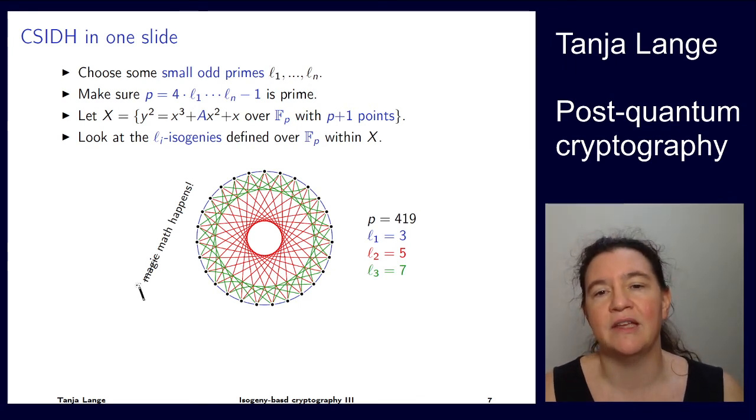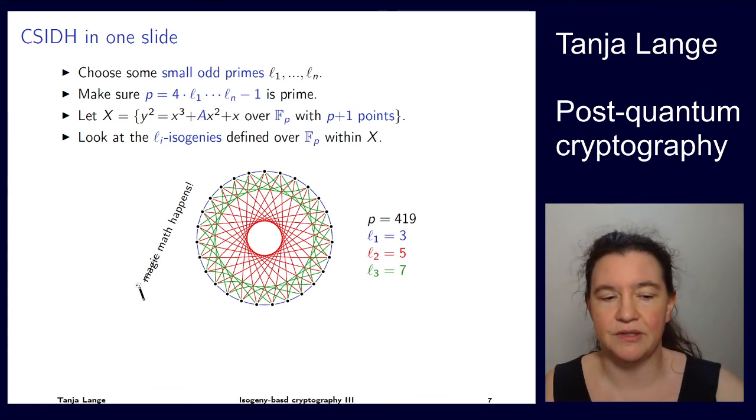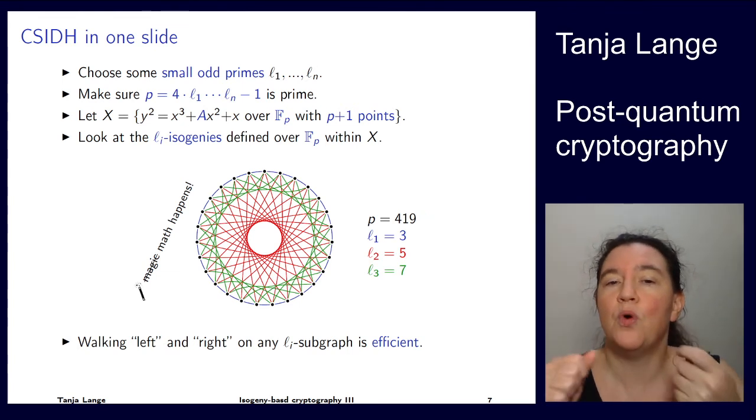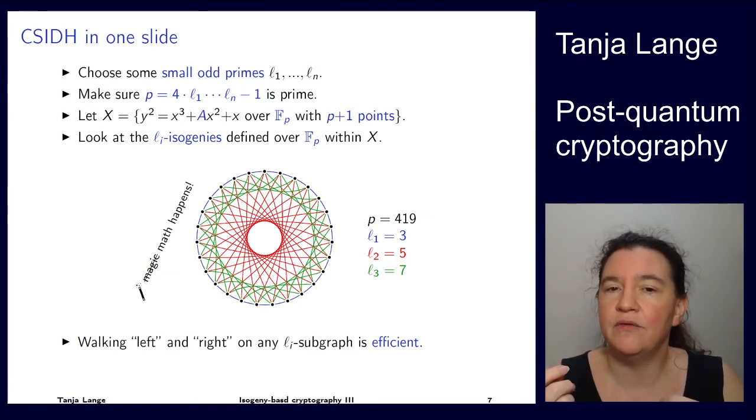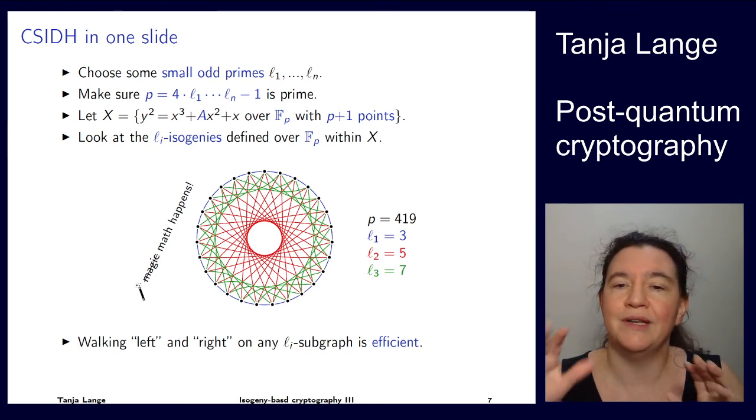So here is a picture of this. This is an actual picture for the case of p512-19. And I'm drawing now, the blue ones are 3-isogenies. So I arranged the curves so that 3-isogenies are adjacent. And then the other ones are 5-isogenies and 7-isogenies. There's a lot of math behind this. But the interesting take-home message is we can walk on this graph efficiently. And there's an understanding of what it means to walk left or to walk right. And we can walk on each of those graphs, the blue one, the red one, or the green one.